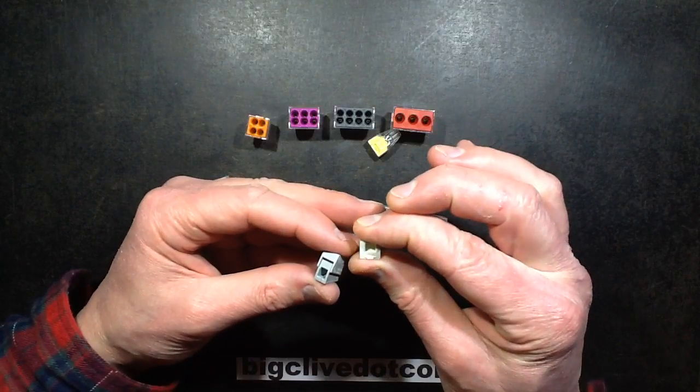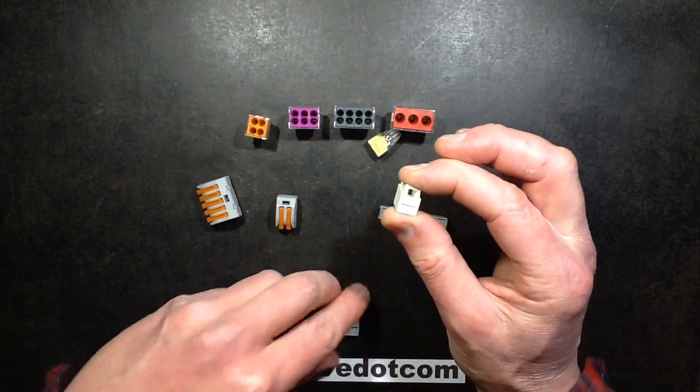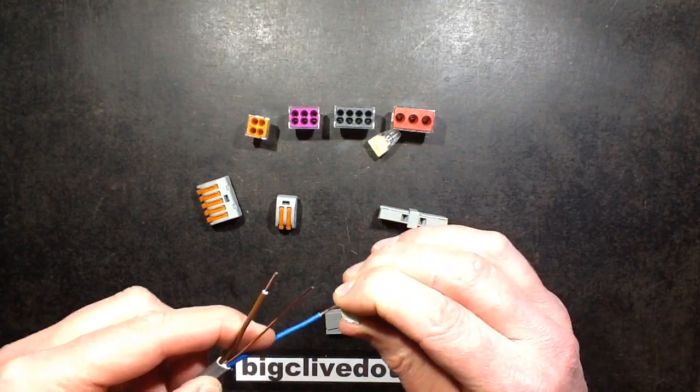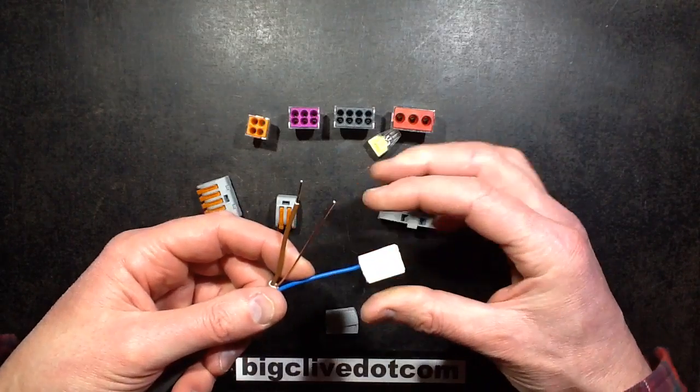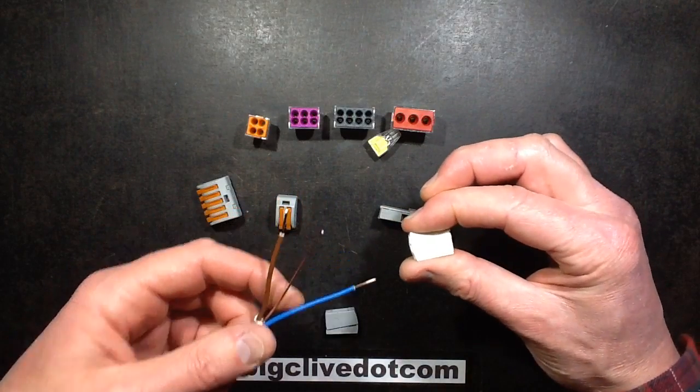When you squeeze these down it opens the terminal, you can pop a wire in. You could probably use a solid core wire as well but it locks it in, and you can unlock it just by squeezing it.